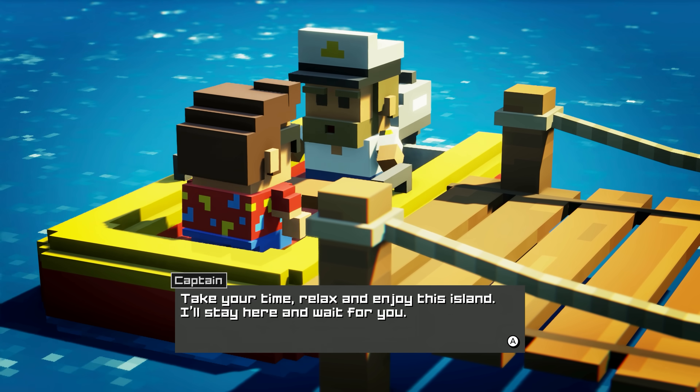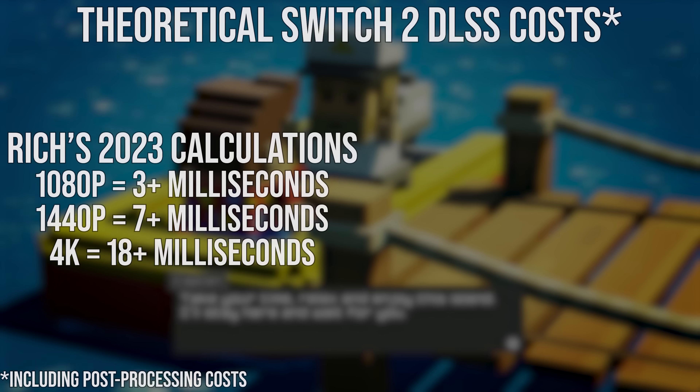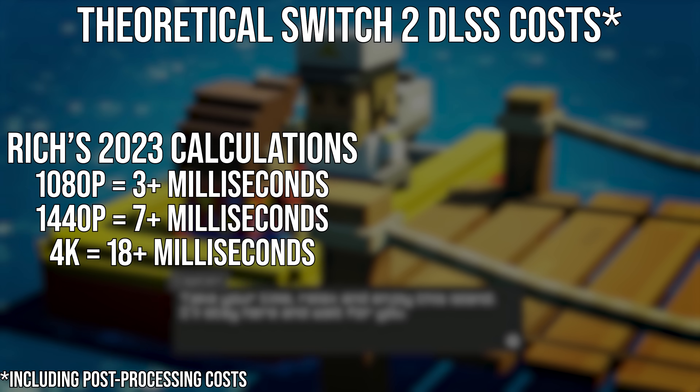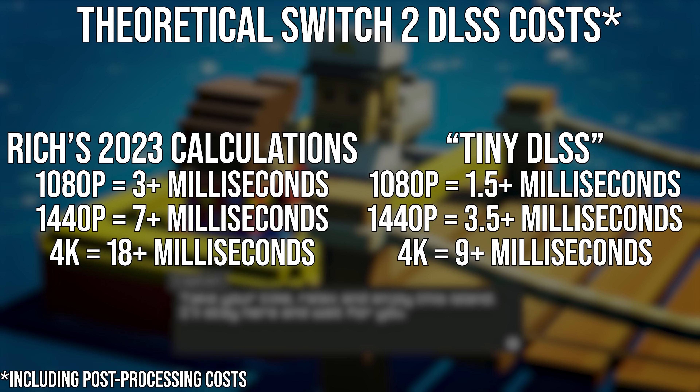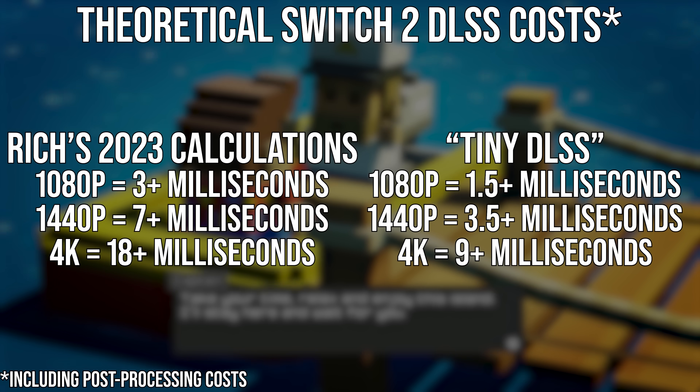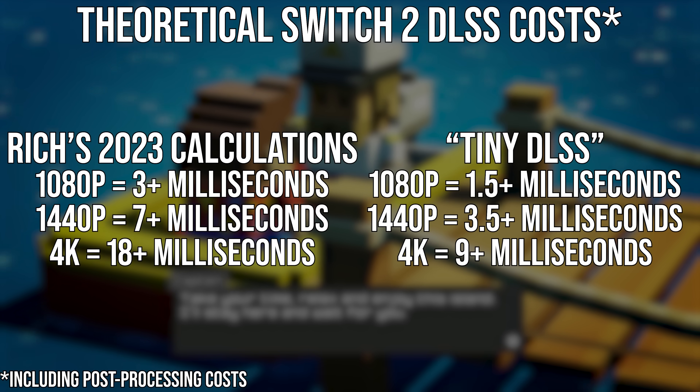Two types of DLSS — that normal PC type we've known for ages, seen in Cyberpunk, and another type like we see in The Tourist. With it being roughly half the cost of the traditional CNN DLSS, it explains how titles like The Tourist or Fast Fusion can work at 60fps at 4K resolution. Rich calculated around 18 milliseconds including post-processing for 4K DLSS on a Switch 2-like GPU, but if it was half the cost — around 9 milliseconds — that would give developers something like 7 or 8 milliseconds of processing time for the game, which is much more realistic for how games could reach 4K.